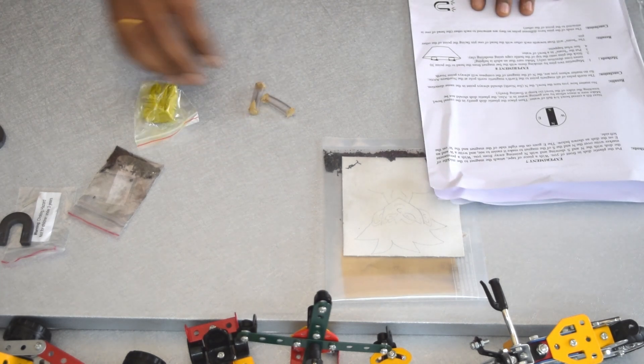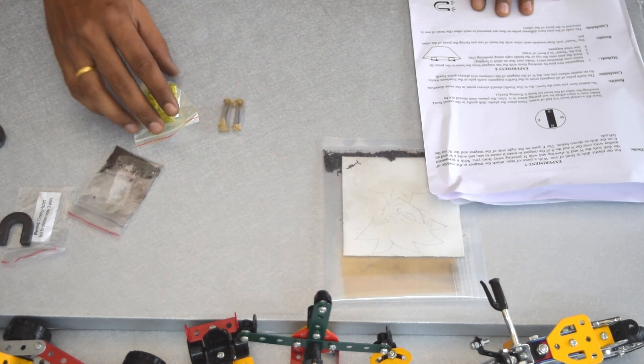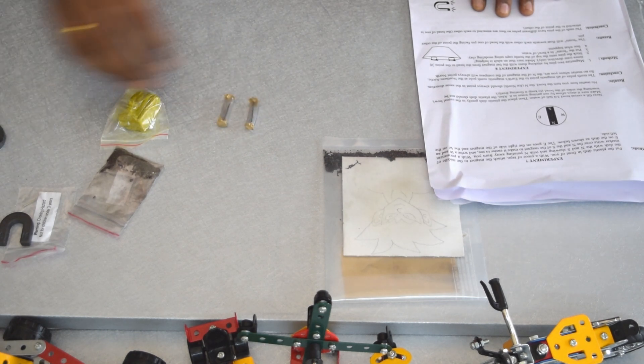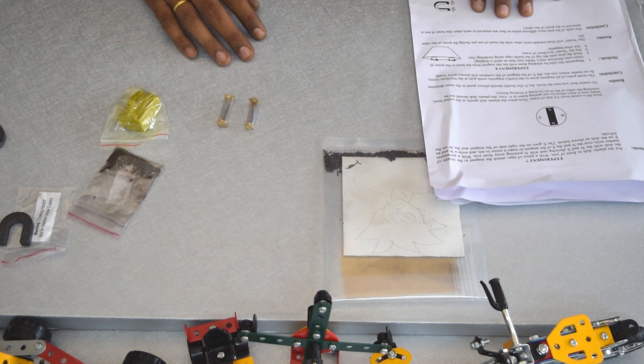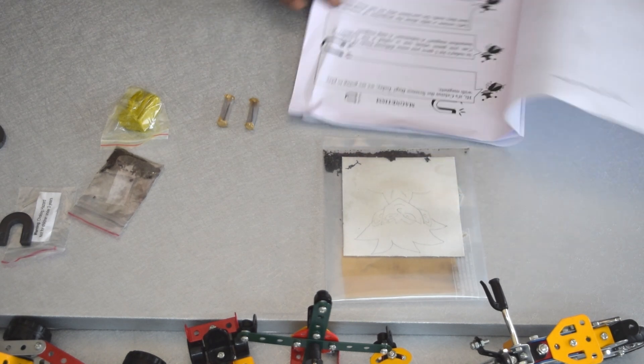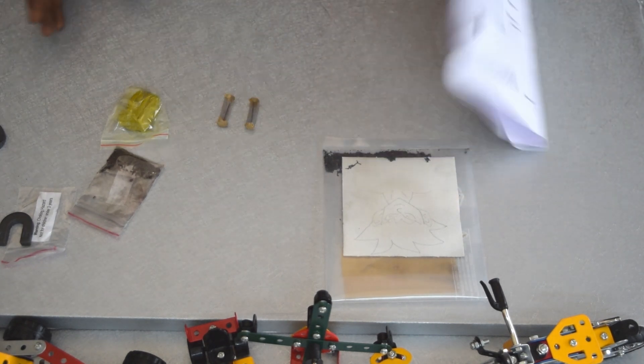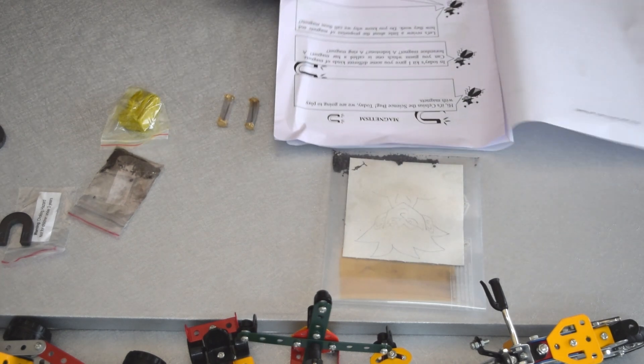The eighth experiment is using the same type of pins and stroking them with the bar magnet. These are all the eight experiments we could do with the magnetism kit.